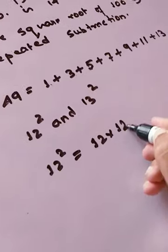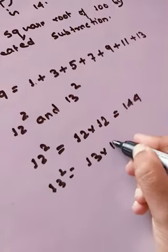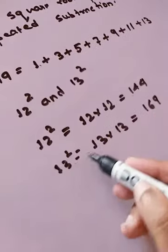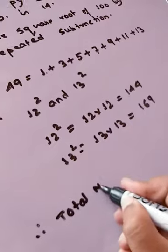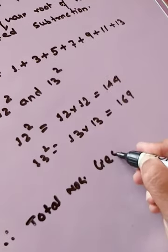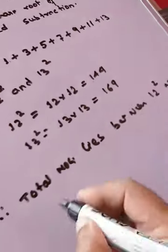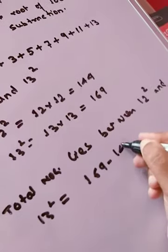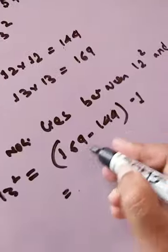12 squared is 12 into 12, that is 144. And what is 13 squared? 13 squared is 13 into 13, that is 169. So after finding the squares of 12 and 13, you will write: therefore, total numbers lying between 12 squared and 13 squared equals 169 minus 144. You put it inside brackets and then do minus 1. First subtract to get 25.